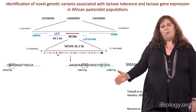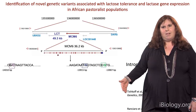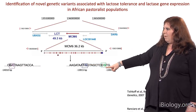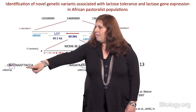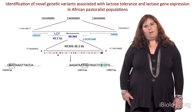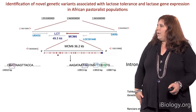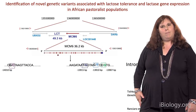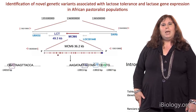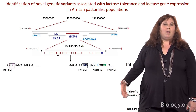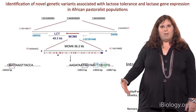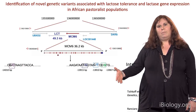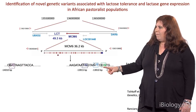Using in vitro cell line studies, we showed that these derived variants regulate expression of the lactase gene using the lactase promoter. They are located very close to the European mutation at position 13910, but arose independently through a process called convergent evolution, probably due to a very strong selective force to be able to drink milk containing lactose in these different regions of the world.